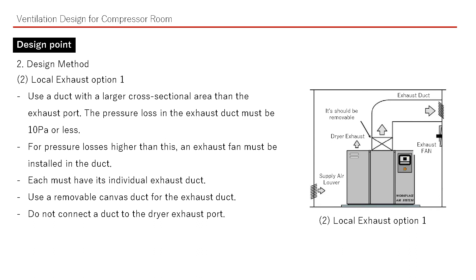About local exhaust Option 1, using a fan for the room. 1. Use a duct with a larger cross-sectional area than the exhaust port. 2. The pressure loss in the exhaust duct must be 10 pascals or less. For pressure losses higher than this, an exhaust fan must be installed in the duct. 3. Each unit must have its individual exhaust duct. 4. Use a removable canvas duct for the exhaust duct. 5. Do not connect a duct to the dryer exhaust port.